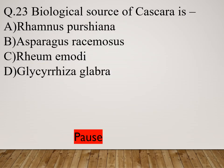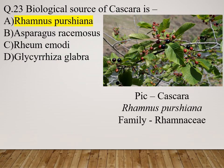Question 23: The biological source of Cascara is: Option A: Rhamnus purshiana. Option B: Asparagus racemosus. Option C: Rheum sp. Option D: Glycyrrhiza glabra. The right answer is Rhamnus purshiana. Scientific name Rhamnus purshiana, family Rhamnaceae.